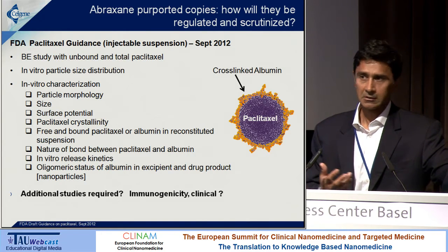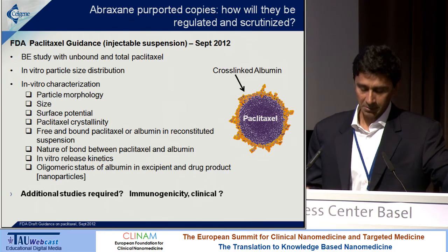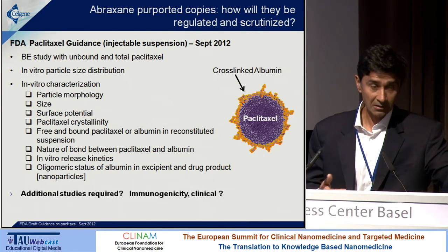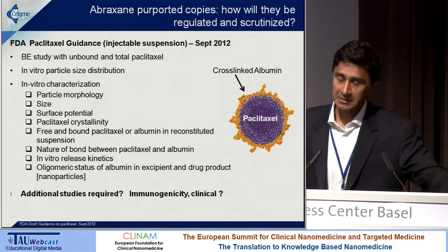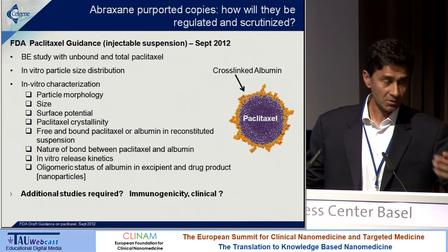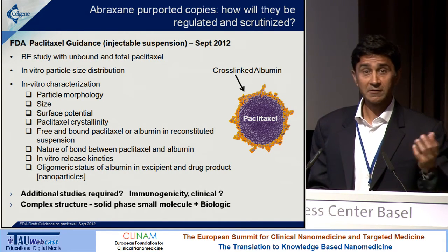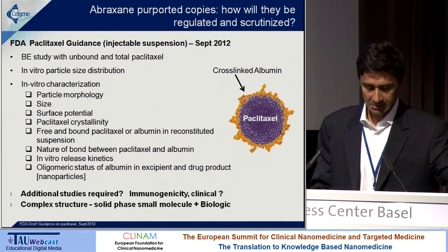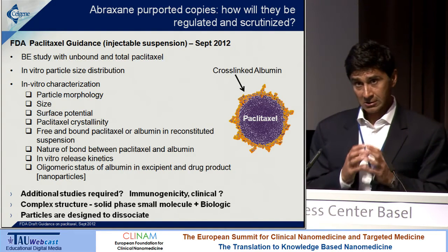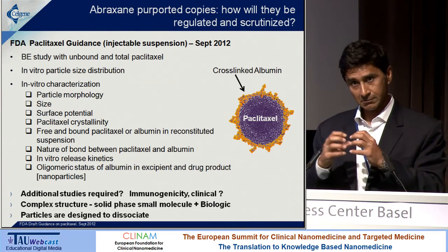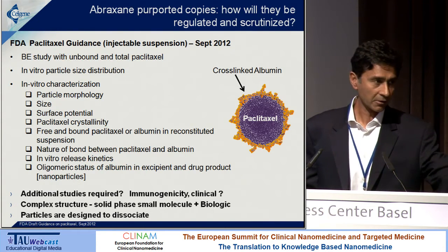Immunogenicity for nanoparticles and nanoproducts may be a key issue depending on the type and composition of the nanoparticles. In this case, we have a protein that is further cross-linked to create a non-native albumin. The question is what that does in terms of immune response when put into a human. It's a complex structure — a mixture of a small molecule and an approved biologic, albumin, by itself. Furthermore, the particles are designed to dissociate, so it's not just looking at the nanoparticle as it circulates — these nanoparticles are breaking down as they circulate, which introduces a whole other level of complexity when you think about bioequivalence studies.